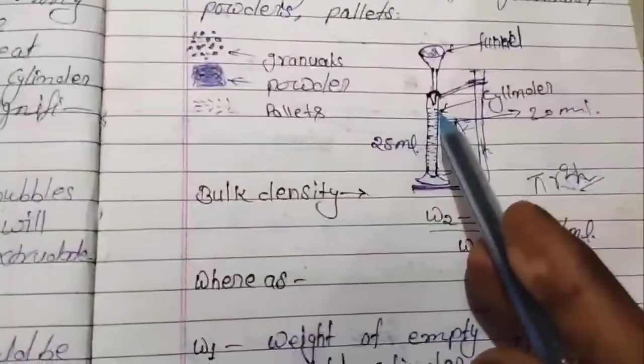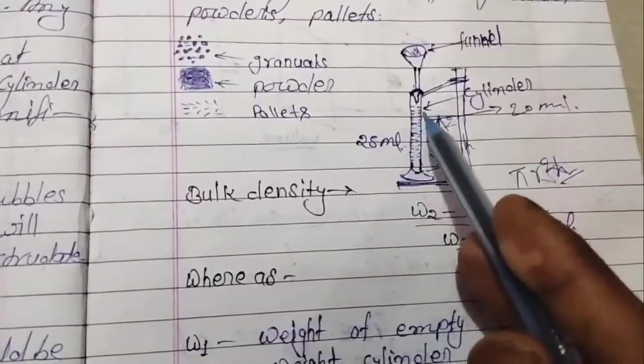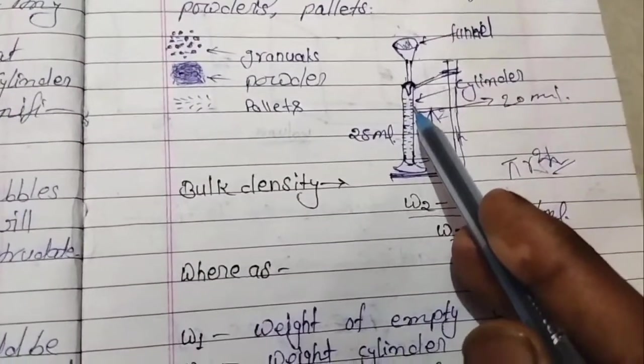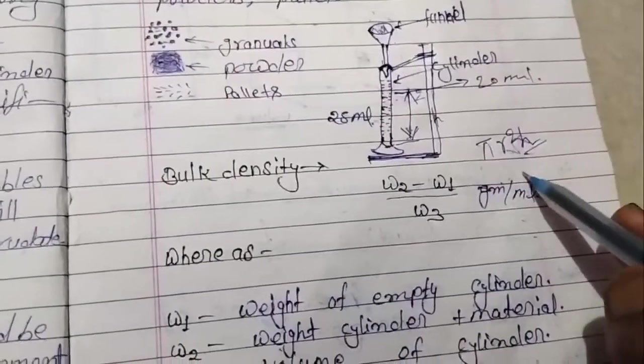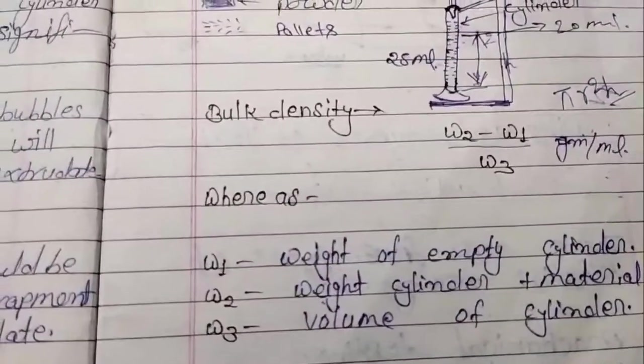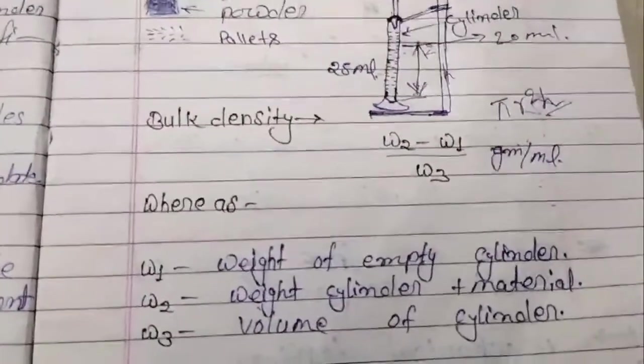And r is the radius of the cylindrical shape. We put the values in π r² h and find W3. After this, we use the bulk density apparatus.